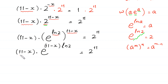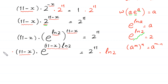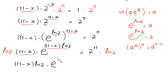Now, to use the Lambert W function we must have the same expression in both positions. But here we have 11 minus x times ln of 2, and here we have only 11 minus x. So to make this 11 minus x the same as 11 minus x times ln of 2, we multiply both sides of this equation by ln of 2. At the left side we multiply by ln of 2: ln of 2 times 11 minus x times ln of 2 times e to the power 11 minus x times ln of 2 is equal to 2 to the power 11 times ln of 2.